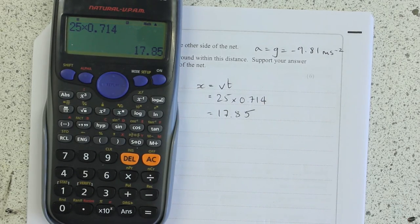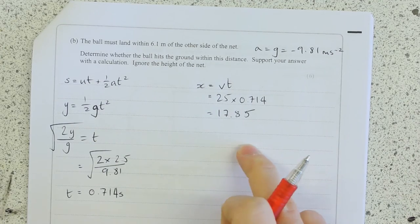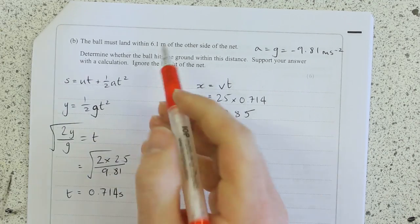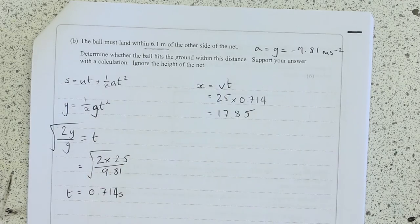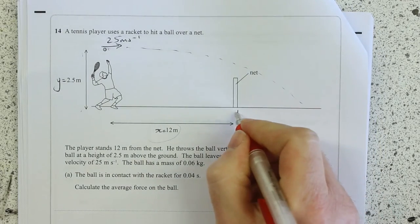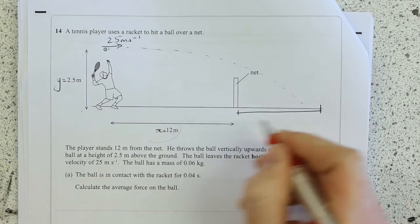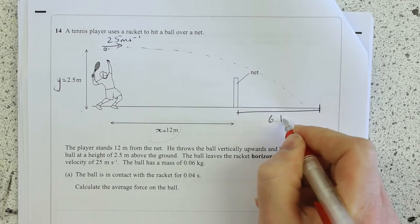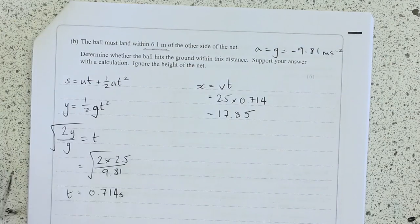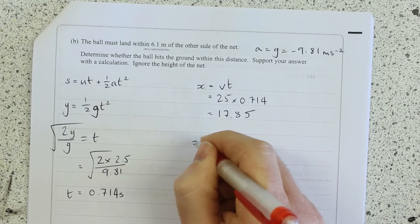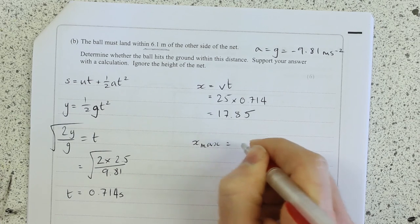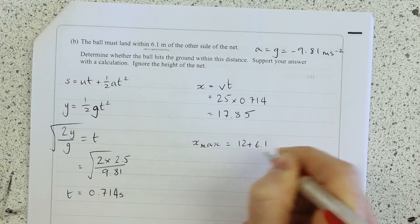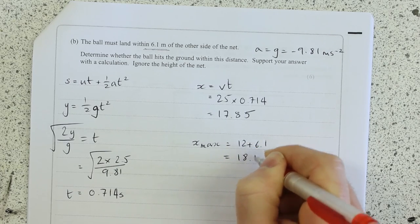Okay, now is that within the acceptable range? Well, you're told it must land within 6.1 meters from the other side of the net. So essentially, the acceptable range is 12 plus 6.1 there. So the acceptable range, X max, is 12 plus 6.1, which is 18.1 meters.